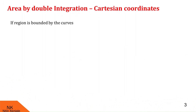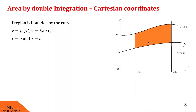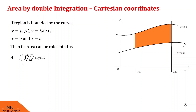Assume the region is bounded by the curves y = f1(x), y = f2(x), x = a, and x = b. Then that area on the Cartesian plane can be represented as a double integral. The area of this region is given by the double integral of dy dx, with inner limits from f1(x) to f2(x) and outer limits from a to b.